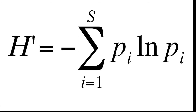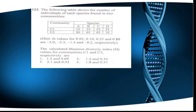In the CSI examination, numericals from the Shannon Diversity Index usually appear and it is very easy to score 4 marks from this topic. I would request you to watch this video fully and attempt those numericals, as it will help you fetch those easy 4 marks.